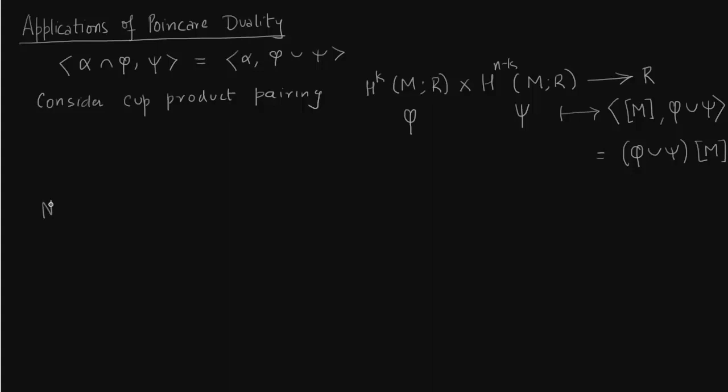So we want to prove or we want to show that this cup product pairing is non-singular. Why do we want to do that? This will help us determine the structure of graded rings. So basically we are able to multiply two different elements in the graded ring. So to do that we need something called the bilinear pairing.